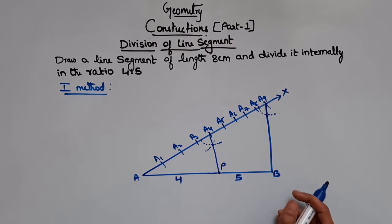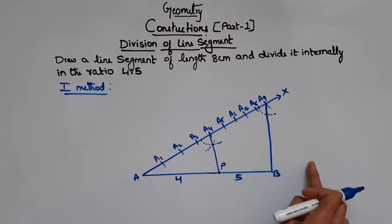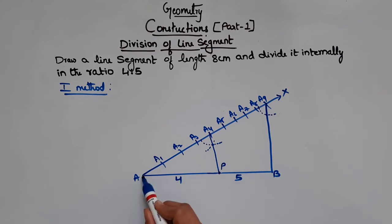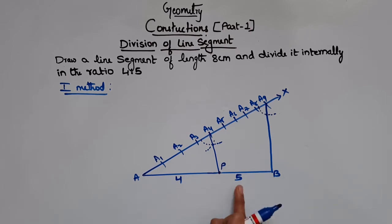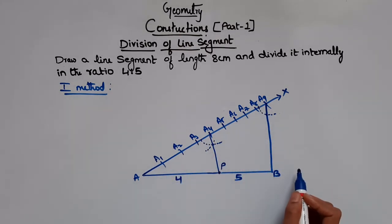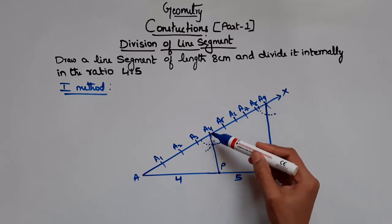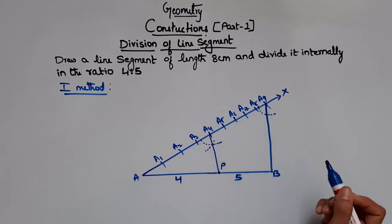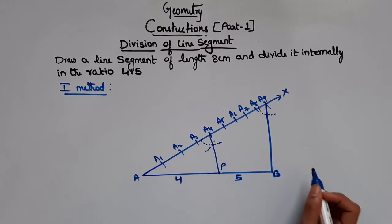Sometimes they may ask for the steps of construction, which you can write in your own words. Step 1: draw a line segment of length 8 cm. Step 2: draw a line from point A making an acute angle with AB. Step 3: the total number of parts is 4 plus 5, which is 9, so take 9 equal parts on line X. Then join A9 with B. Then draw a line parallel to A9B from A4 by making the angles equal. The point where it meets AB is the required point.